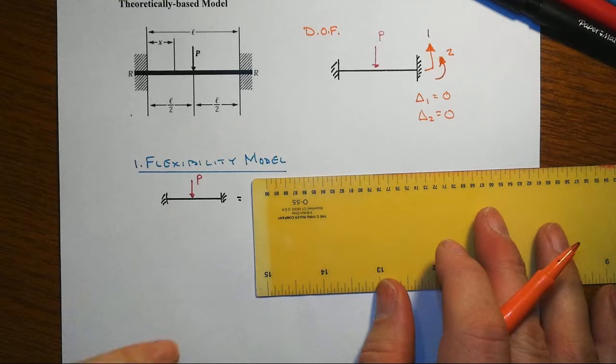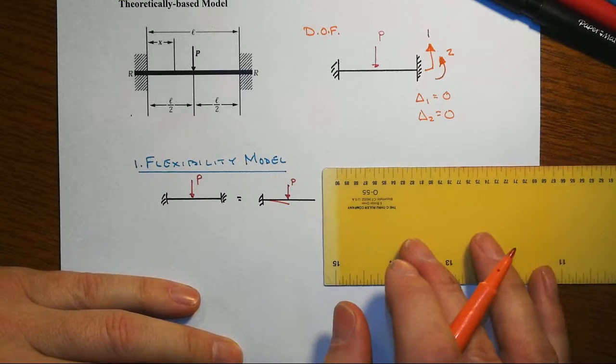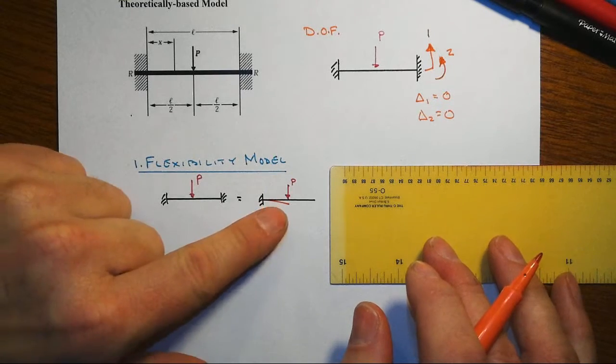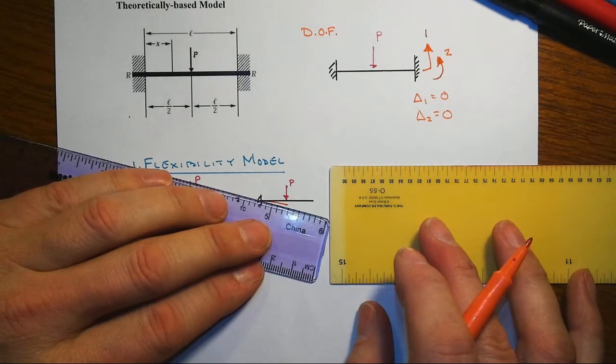So we'll come back now to our full original system, the fixed-fixed with the concentrated load, and we will then strip off the reaction out at the end, put the real structure on.